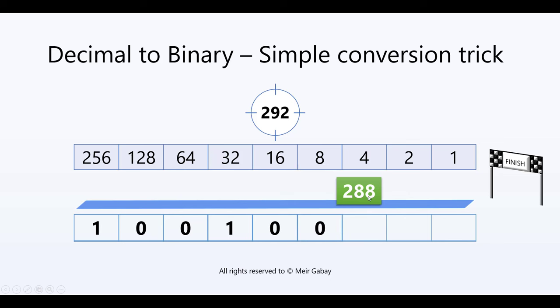Moving on to 4. 288 plus 4 fits in 292. That's a bullseye. So we sum them up. We put 1 over here. And then we know that the rest of the numbers over here must be 0, because we don't need to sum them also because we got the number.